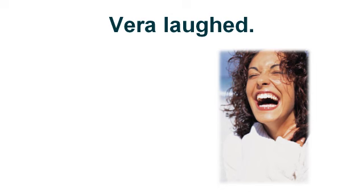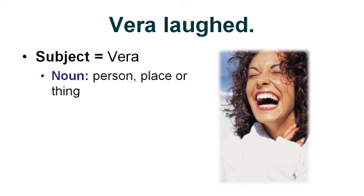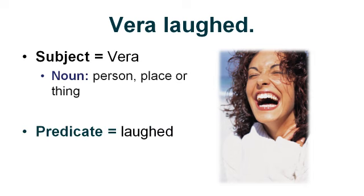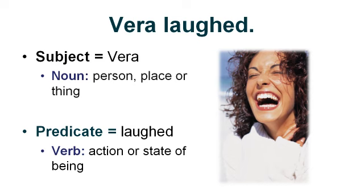Let's take a look at an example of a simple sentence: Vera laughed. The subject is Vera. Remember, subjects are nouns, and nouns are persons, places, or things. The predicate or the verb is laughed. Remember that the predicate starts with the main verb within the sentence, and then everything after the verb is the predicate. Remember, a verb expresses action or a state of being.